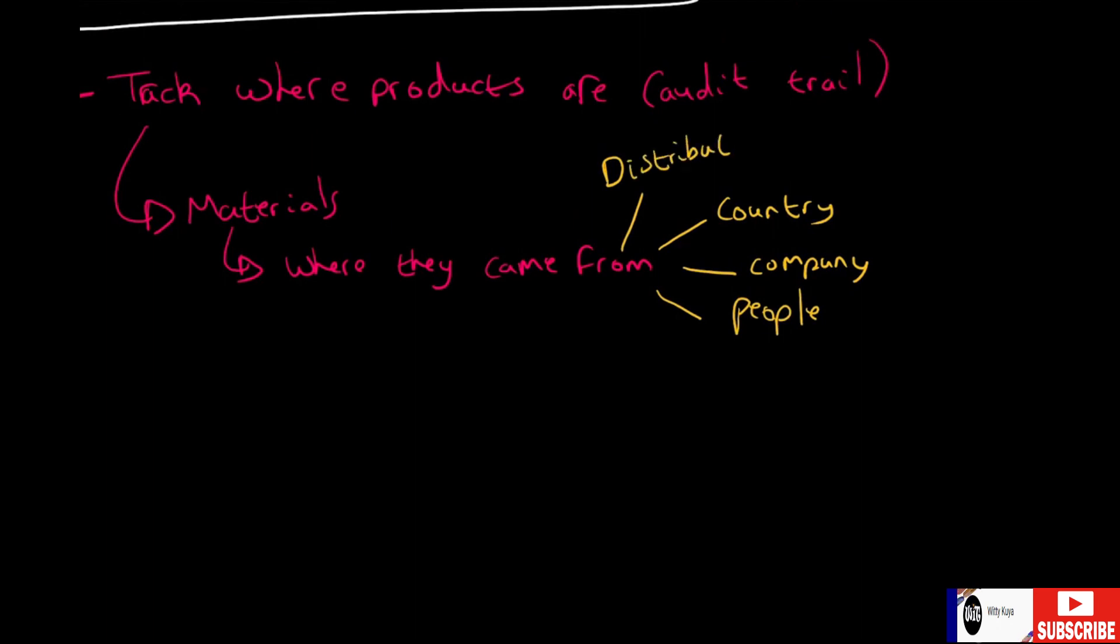It can also include the distribution: how did it go from this country to this company, then eventually how did it come into being in this particular product? So that's where it came from.